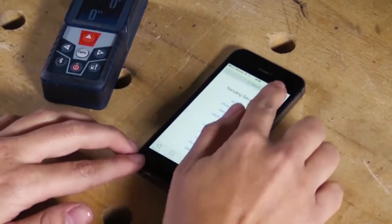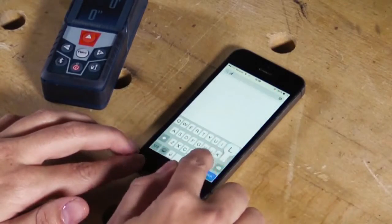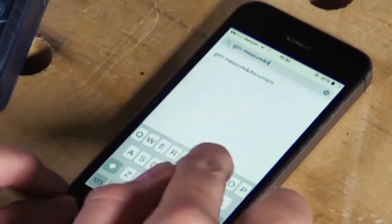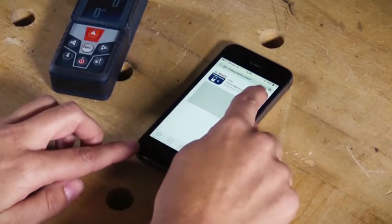First let's download the app from either your Apple App Store or your Google Play Store. You can do this by searching GLM measure and document. Again, this app is free.